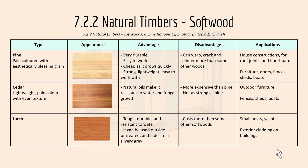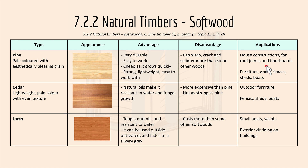Then we have 7.2.2 natural timbers softwood. Pine is a pale color with aesthetically pleasing grain. It's very durable, easy to work with, and cheap as it grows quickly. The disadvantage is that it can warp, crack, and splinter more than some other woods. It's used in house construction and furniture.